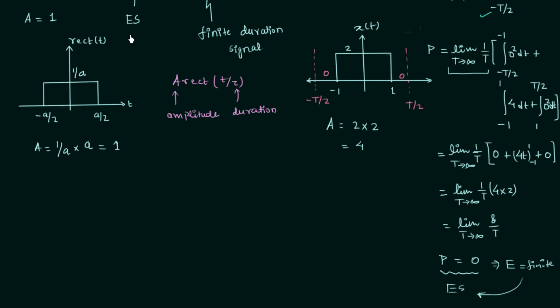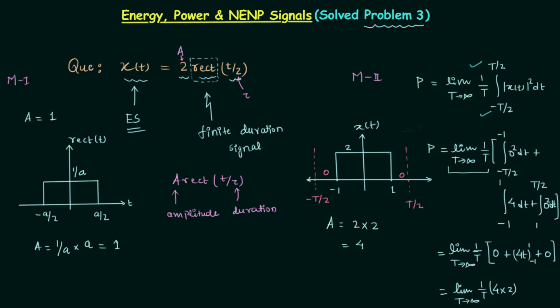Both Method 1 and Method 2 give us energy signal as the answer. You can follow either method depending on the situation. For multiple-choice questions, Method 1 saves time. For conventional written solutions — such as university exams or conventional competitive exams — Method 2 is more appropriate. If you have any doubt, ask in the comment section. See you in the next one.